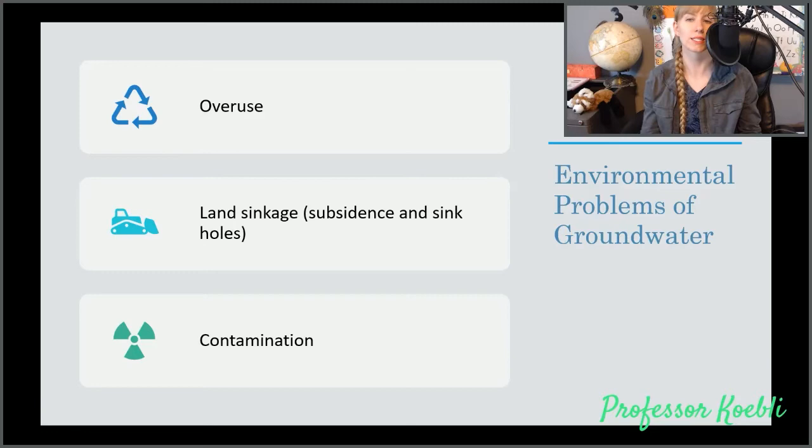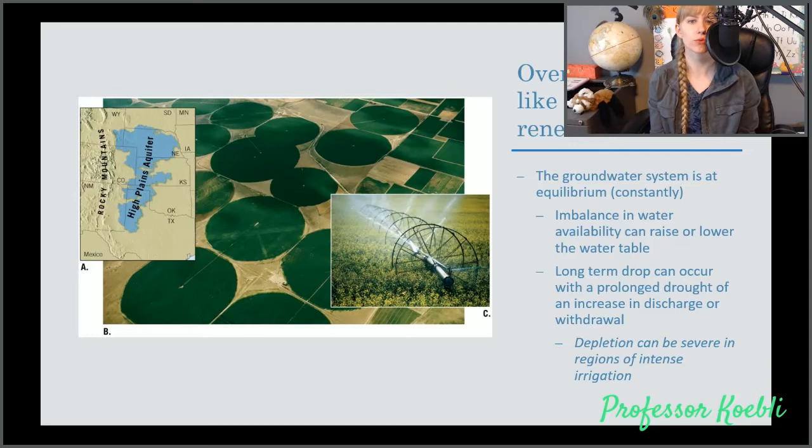There are a lot of environmental problems that are a result of groundwater such as overuse, land sinkage, and contamination. Overuse. Basically, treat water like it's a non-renewable resource, particularly groundwater. It took a long time for these aquifers to form, hundreds of thousands of years. So it's always in equilibrium on its own. Imbalance in water availability can raise or lower the water table. Long-term drop in the water table can occur with prolonged droughts or an increase in discharge or withdrawal.